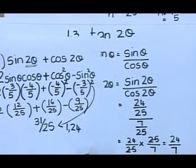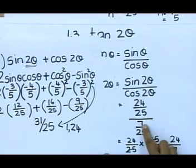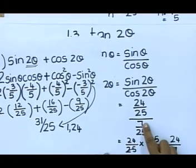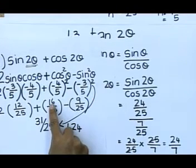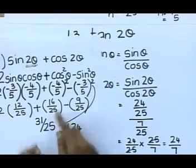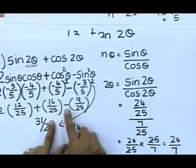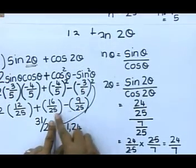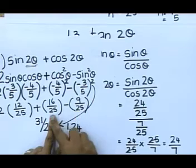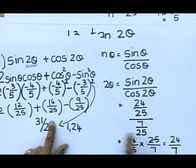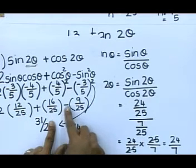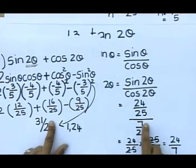Remember some people ask me, ma'am, where did you get the 7 from? Let me just show you quickly. You've got 16 over 25, I'm working with cos here, minus 9 over 25. You've got the same LCD here, which is 25. 16 minus 9 gives me that 7 over 25, and I have 24 over 7.